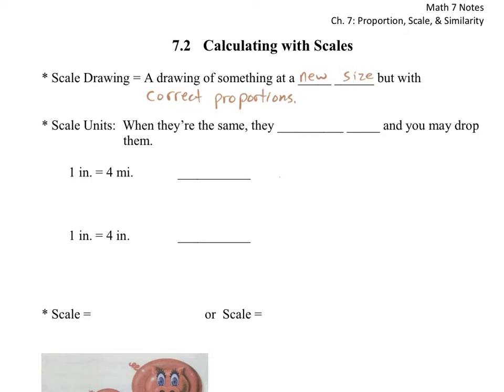So scale units. When they're the same, they cancel out and you may drop them. In other words, when we have one like this here, the 1 inch equals 4 miles, you're pretty much stuck writing it that exact same way. You can rewrite it in the blank if you want to, or you could just circle it or leave it or something like that.